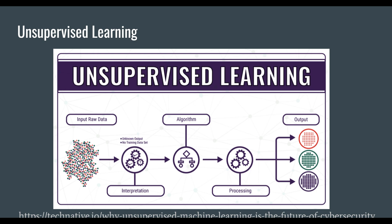In unsupervised learning, we do not provide any labels or structured data to the model. Instead, we just give it everything we have — much like Scotty in Star Trek — and let the model figure out what that means. The best way it does this is through clustering, either hard or soft.